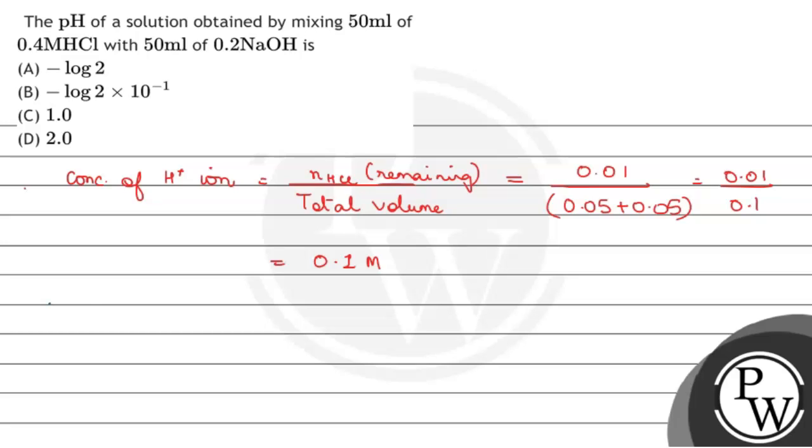Now, pH is equal to minus log of hydrogen ion concentration. So putting the value, it will be minus log 0.1, which equals 1.